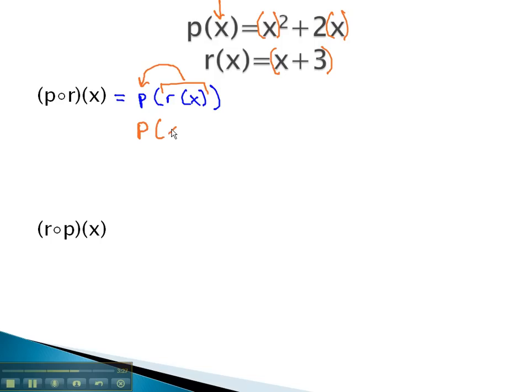In the p function, we'll see r(x), or x plus 3. This means we have x, which is now x plus 3, plugging the r function in, squared, plus 2 times x, which is the r function, x plus 3.